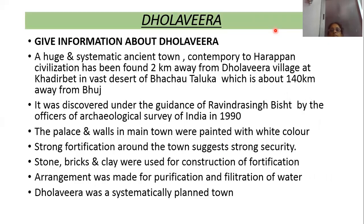The next topic is Dolavira. A huge and systematic ancient town — Kandambari, meaning existing at the same time as the Harappan civilization — has been found 2 kilometers from Dolavira village at Kadir Pet in the vast desert of Bachavu Taluka, about 140 kilometers away from Bhuj in Gujarat.